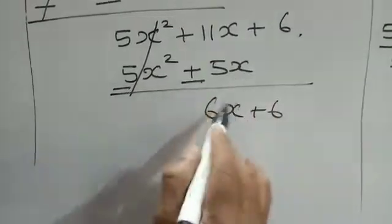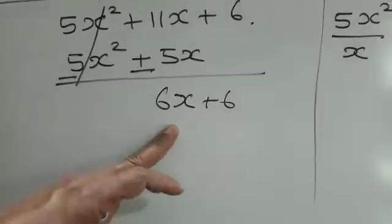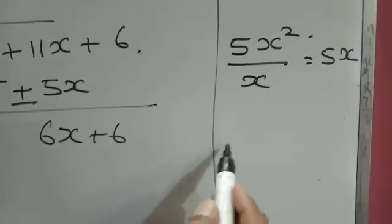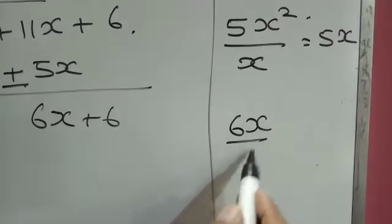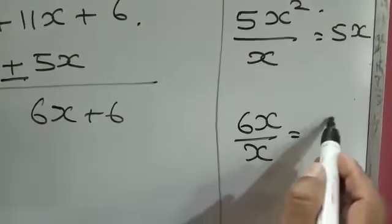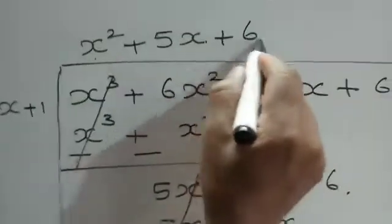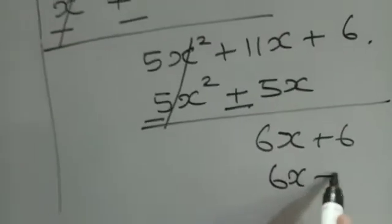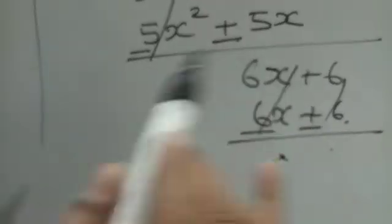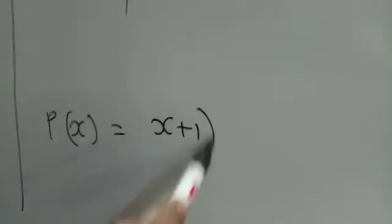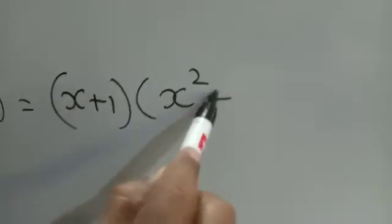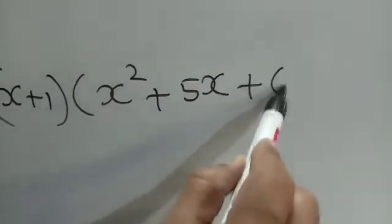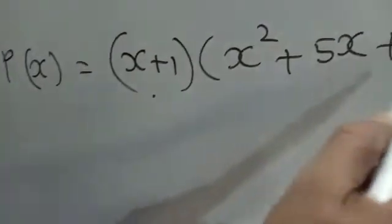Continue dividing because the degree of the remainder equals the degree of the divisor. Dividing 6x by x gives 6, the next term of the quotient. Multiplying: 6(x + 1) = 6x + 6. Subtracting gives 0. Thus the given polynomial p(x) can be written as (x + 1)(x² + 5x + 6). We now have one linear polynomial and one quadratic polynomial.